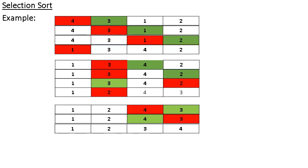In case of selection sort, at the end of each scan, the smallest element is placed in the first position of the array. After the second scan, the second smallest element is positioned in the second position. In bubble sort, we compare adjacent elements and if they are out of order, we swap them. In selection sort, we scan the array to find the minimum element and then swap.